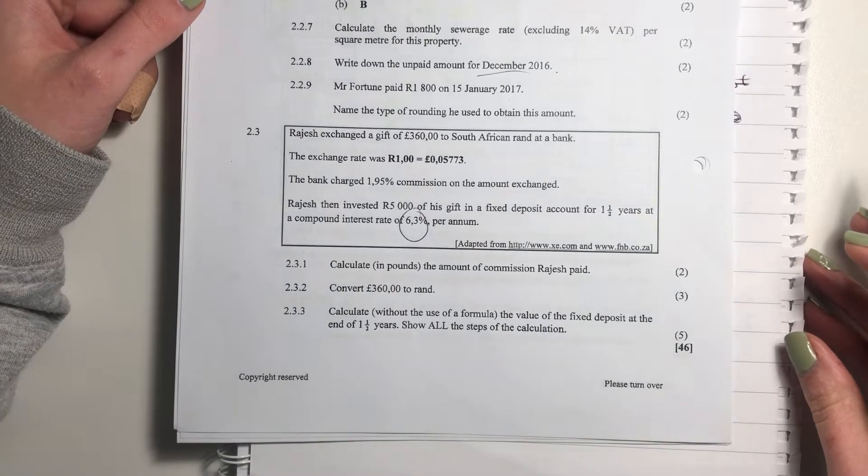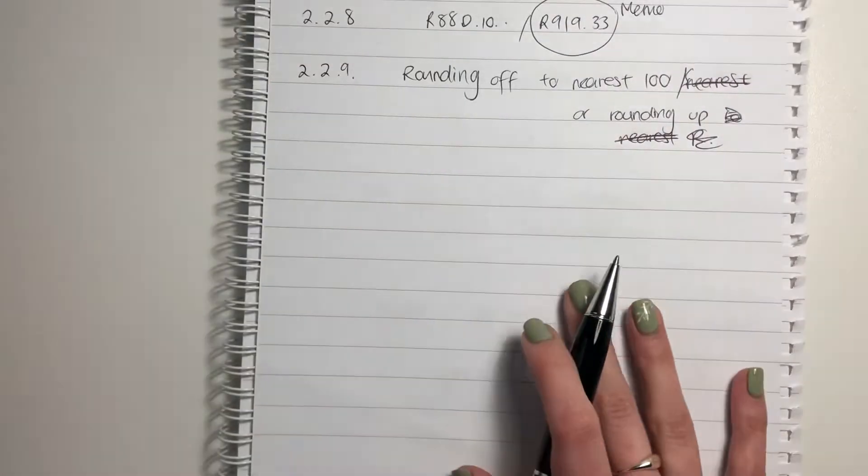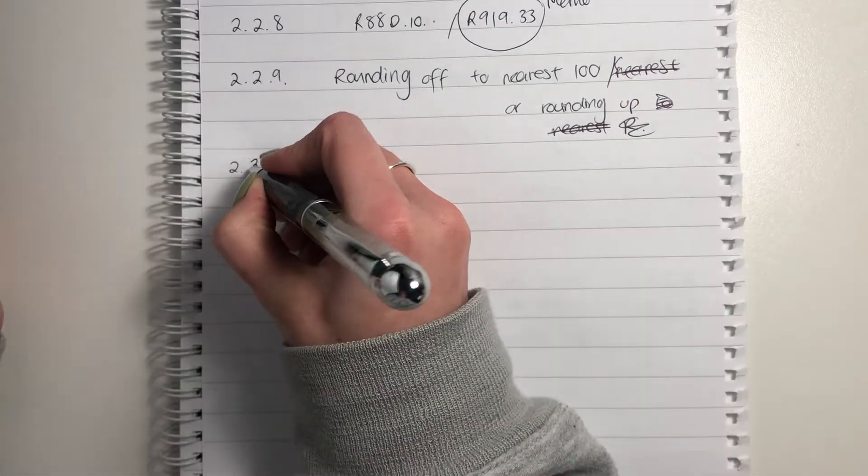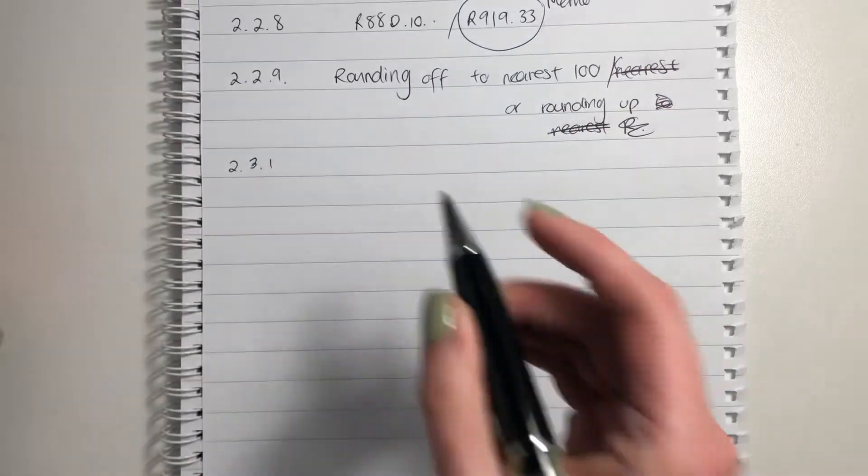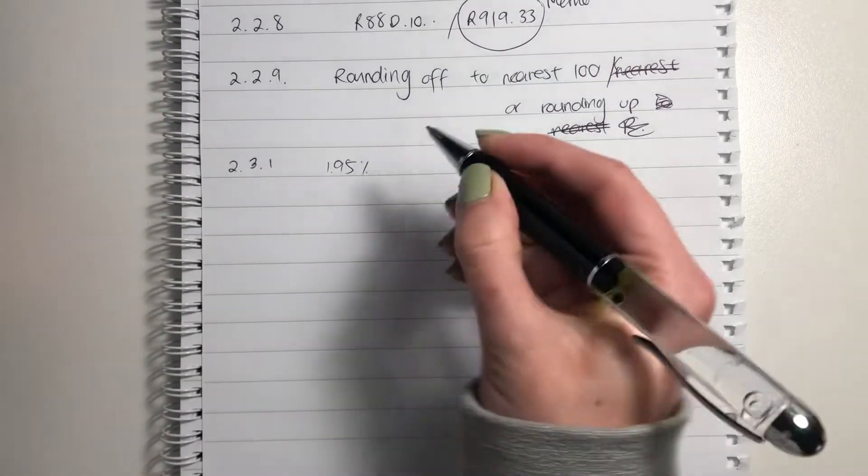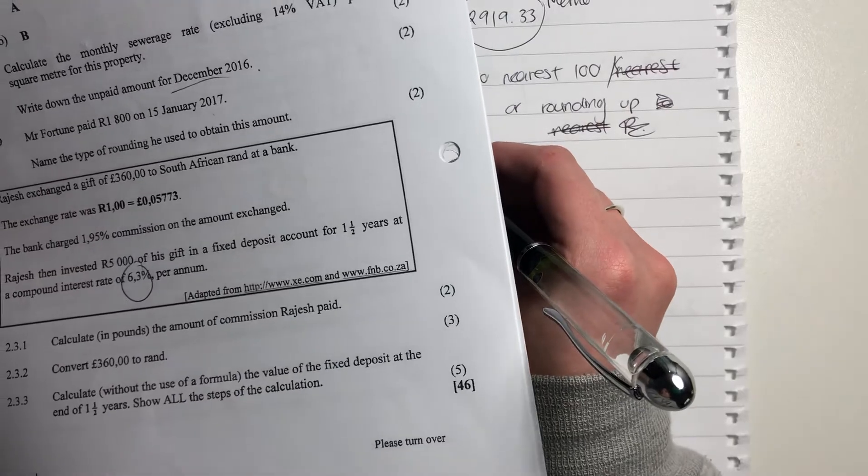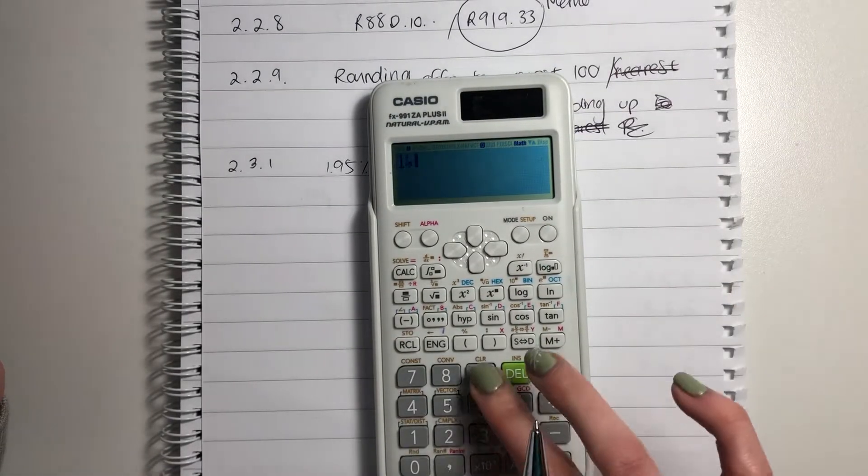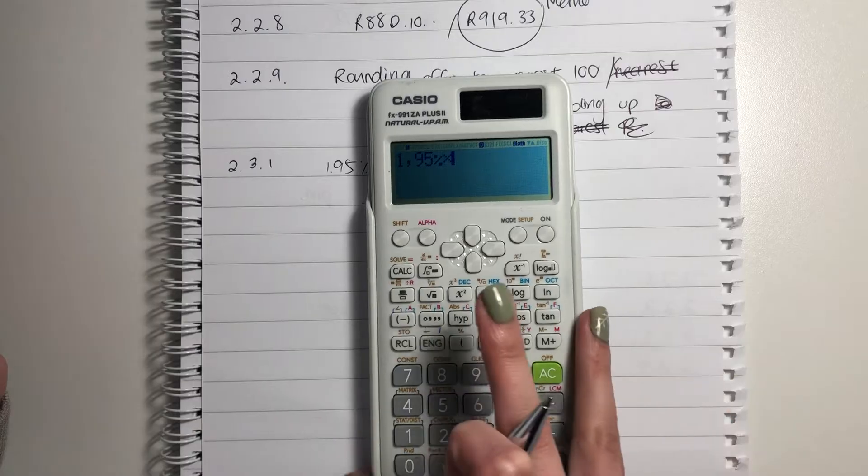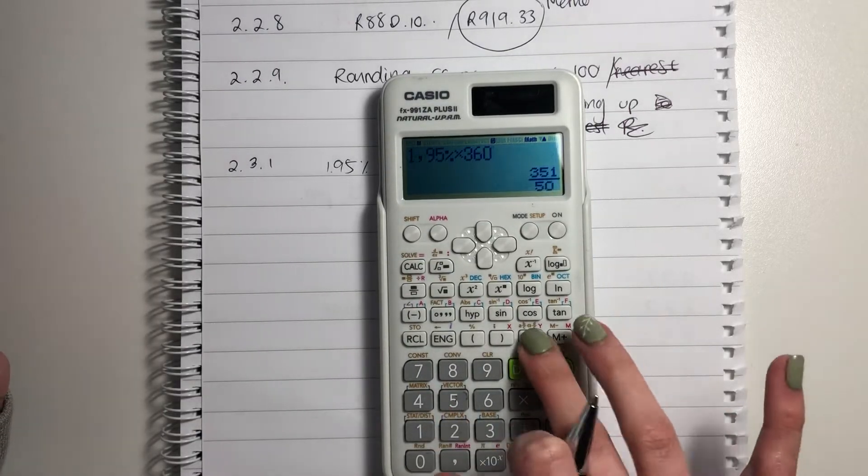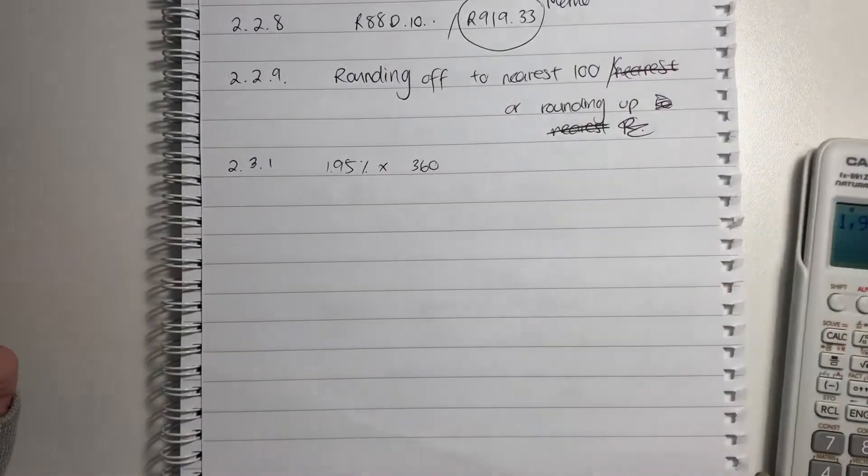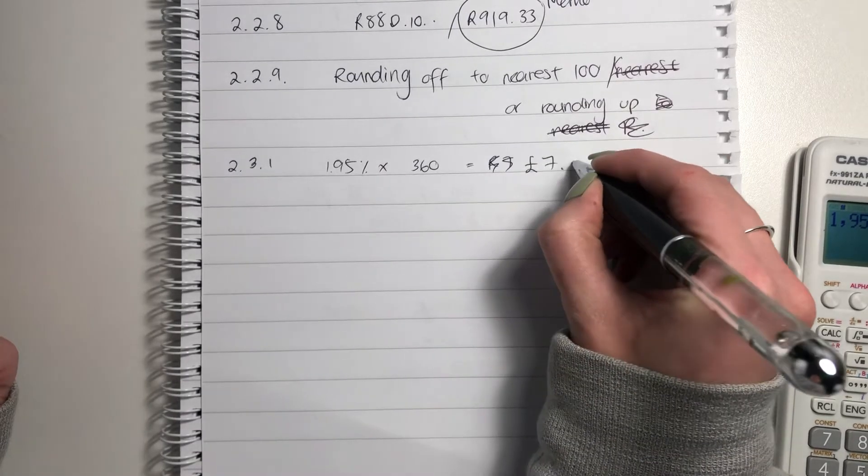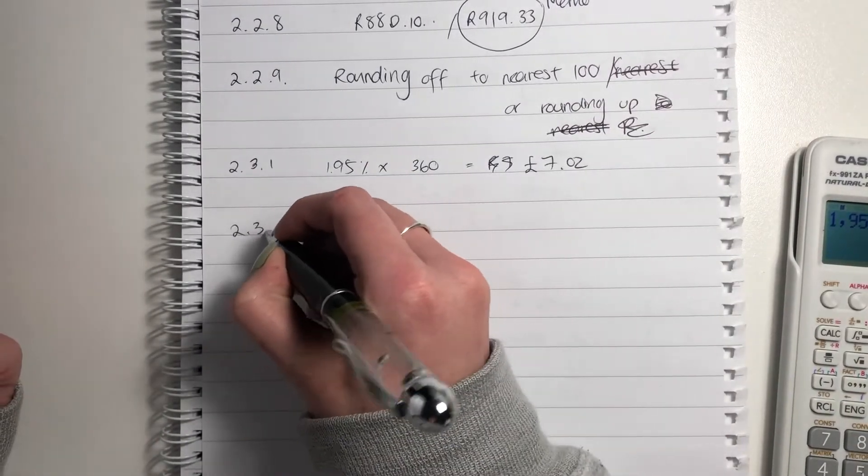It says calculate the amount of commission Rajesh paid. So this is not a very difficult question. All we need to do is 2.3.1. The commission was 1.95%. So we say 1.95% times by, and it says in pounds, so we don't have to do any conversions here. Just make sure that when you put this into your calculator, put in the percentage sign, and your answer then from a commission perspective is pounds £7.02. If you don't know how to do the pound sign, just write pounds afterwards.